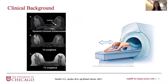Modern MRI exams are multi-parametric, which means that we acquire multiple MRI sequences during one exam. This figure shows a few example MRI sequences taken during the same exam for the same patient. These images clearly look different and they provide complementary information of the anatomy being imaged.